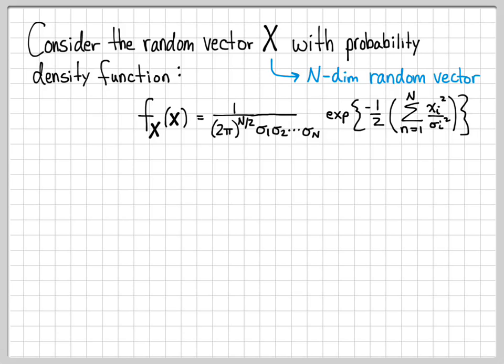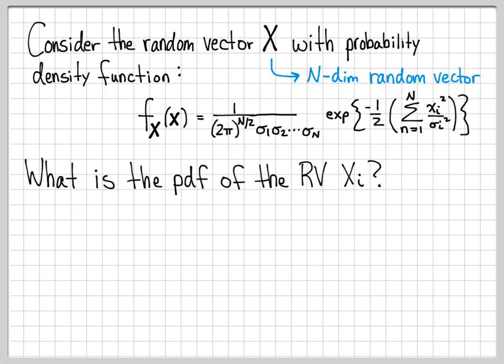Each entry itself is a random variable, and what we are going to do is find the probability density function of just one of these random variables. We want to compute the probability density function of the random variable x_i — the density function of the i-th coordinate of the random vector x.